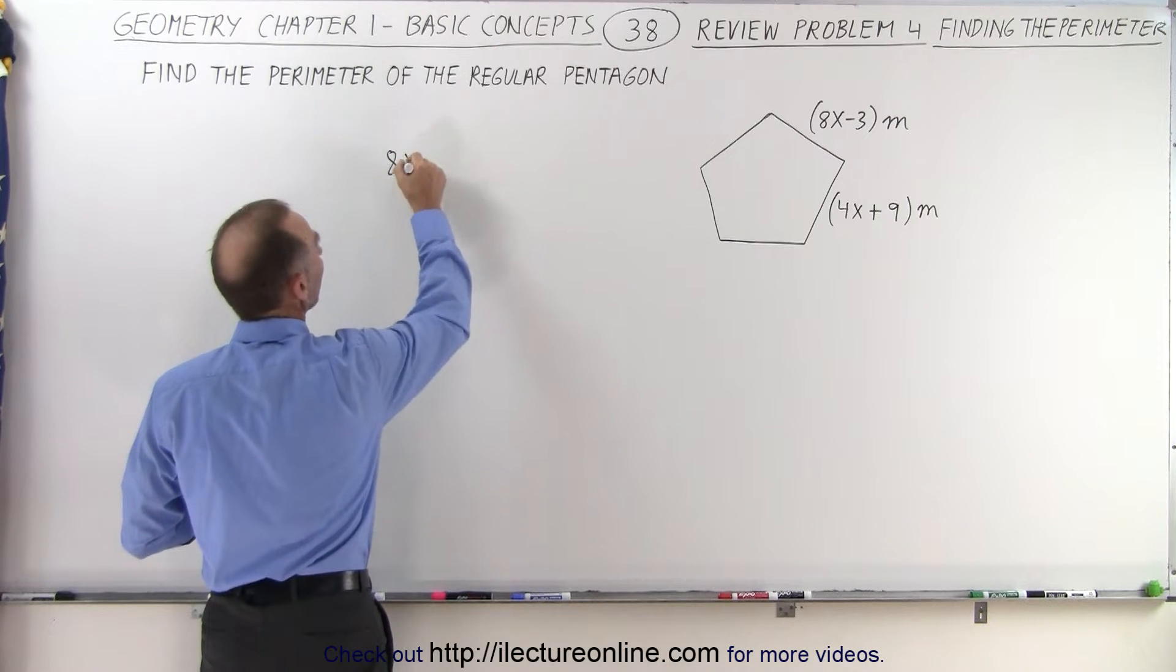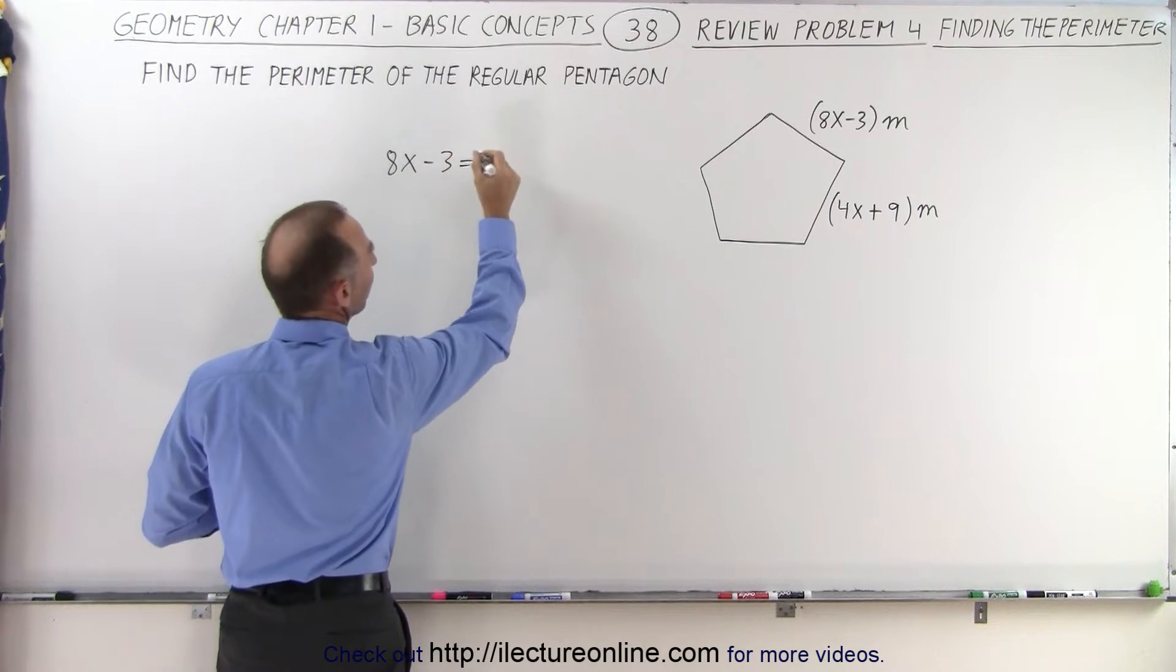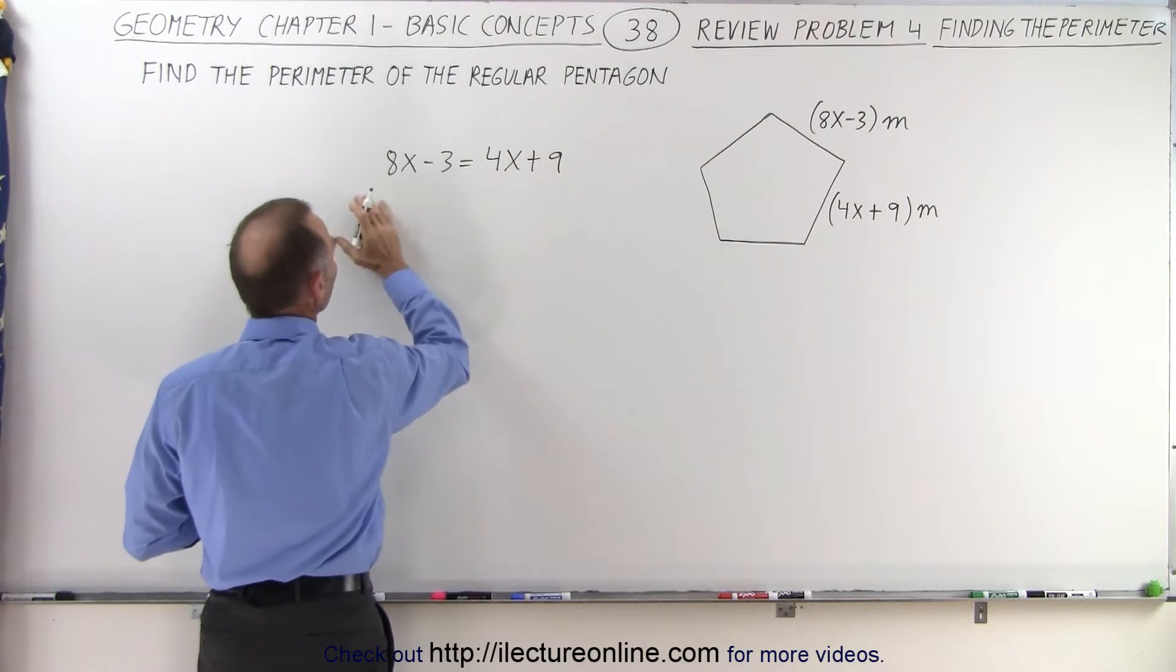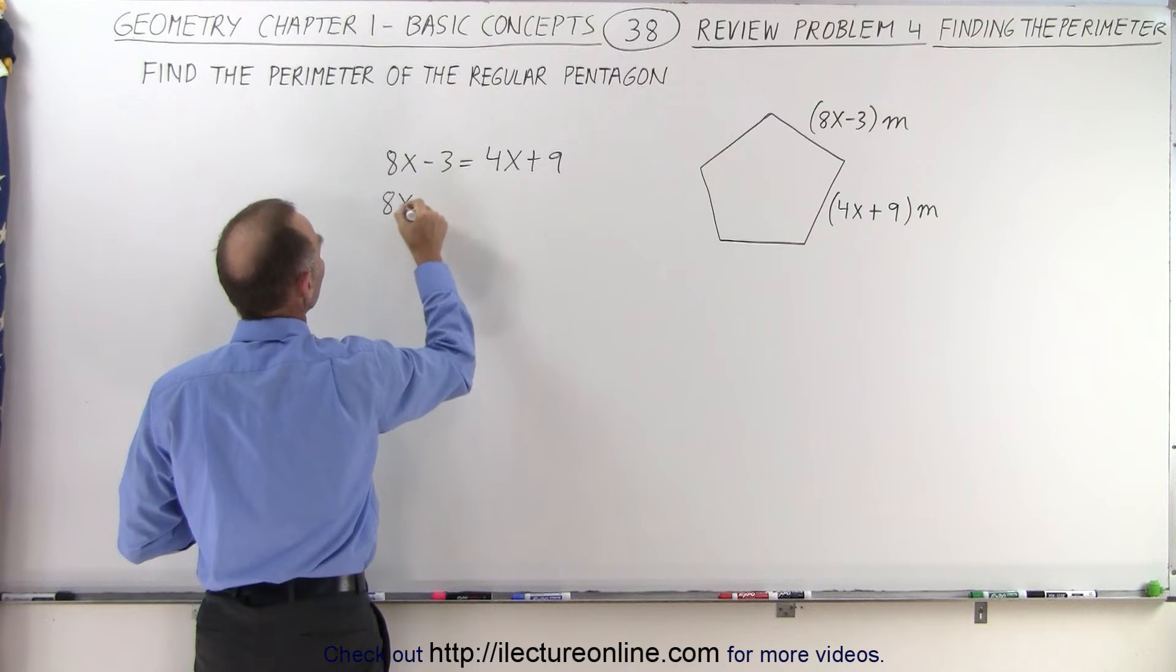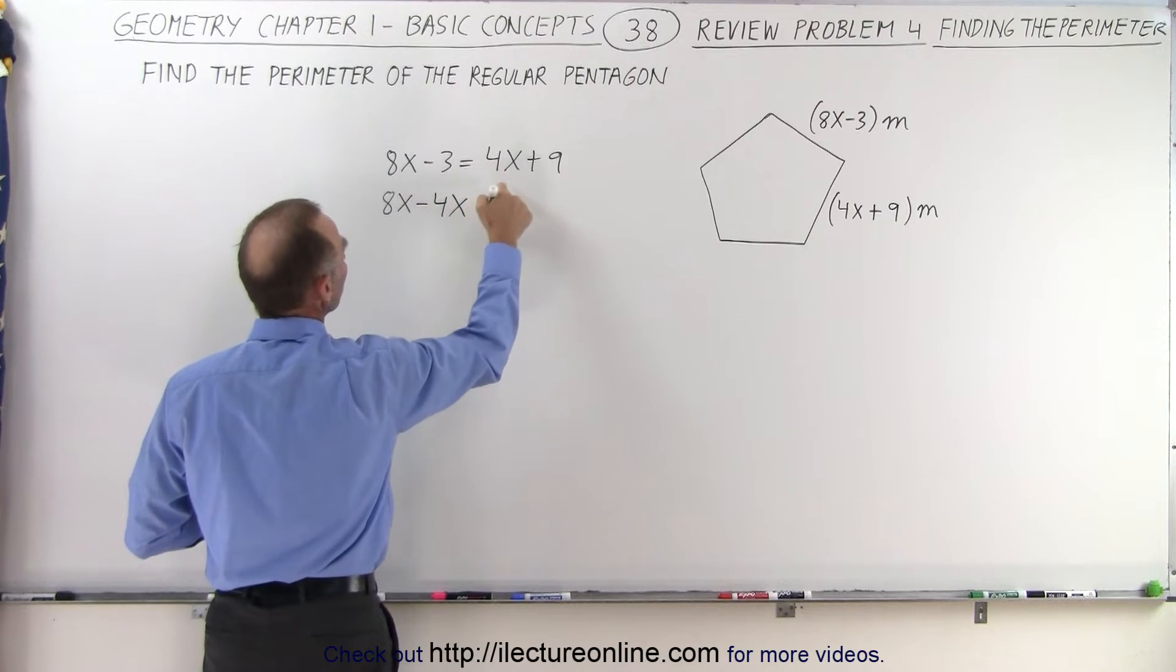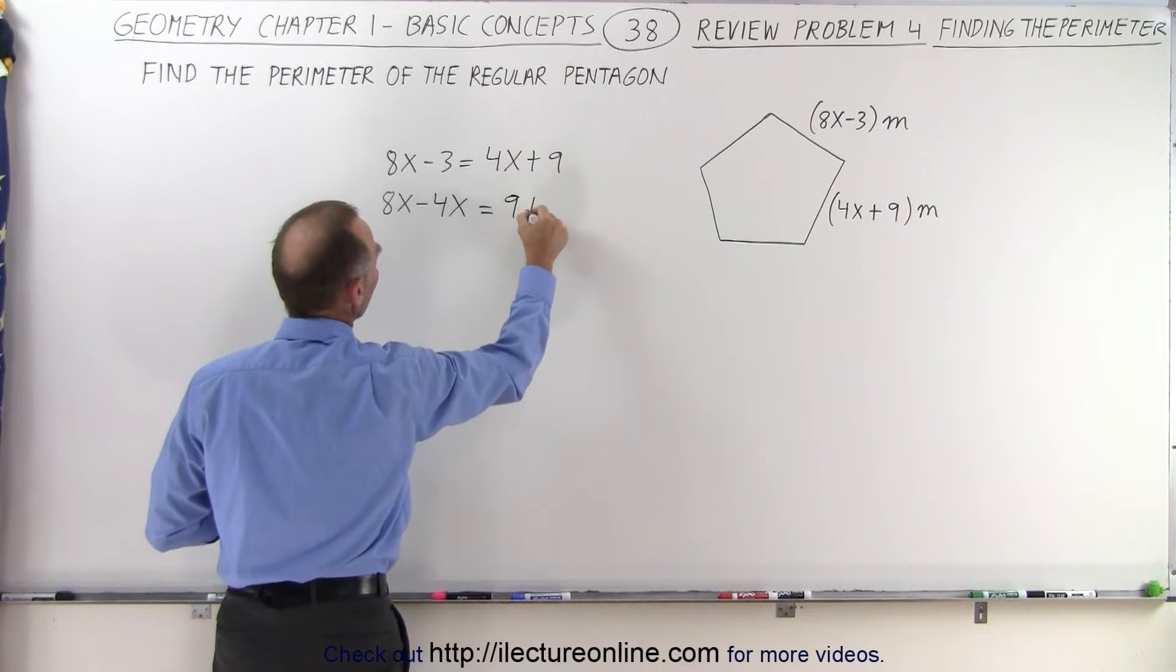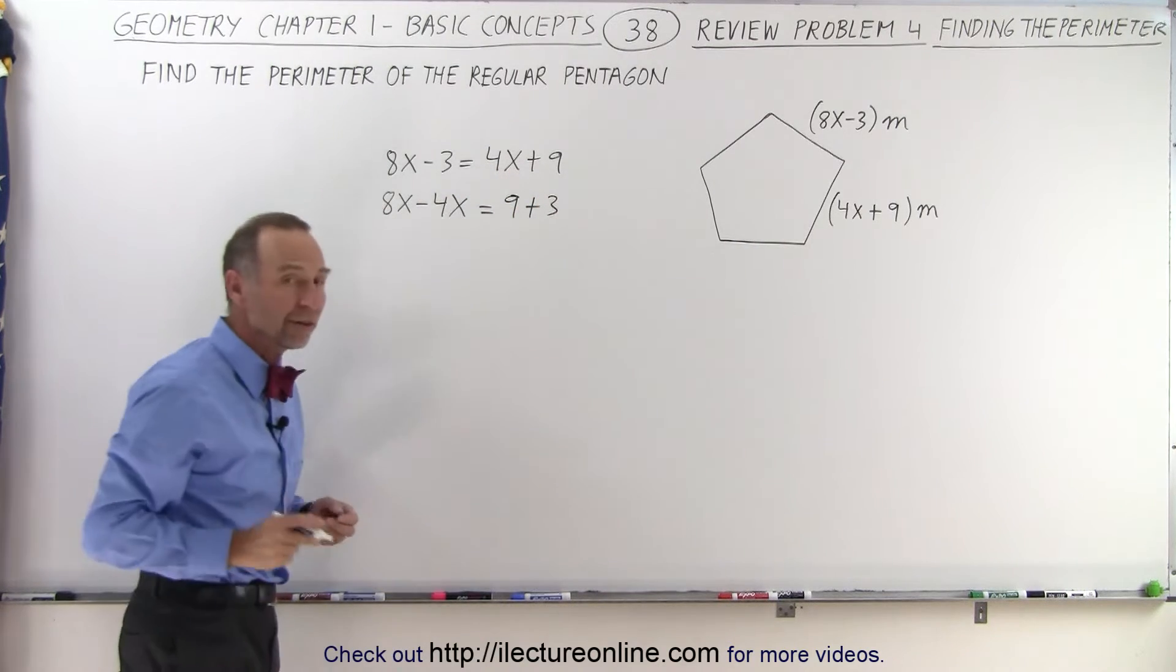We have 8x minus 3 equals 4x plus 9. Let's move all the x's to one side: 8x minus 4x. When you move the 4x to the left side it becomes minus 4x, and when we move the negative 3 to the right side it becomes positive 3.